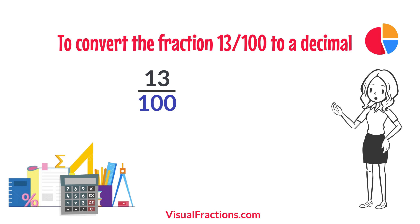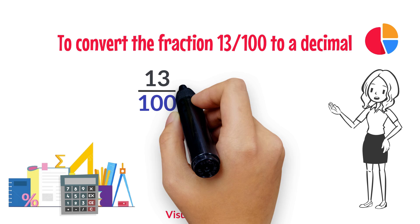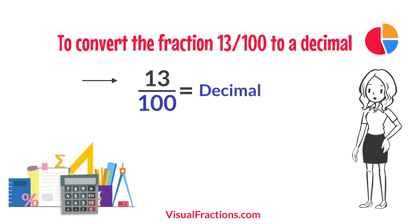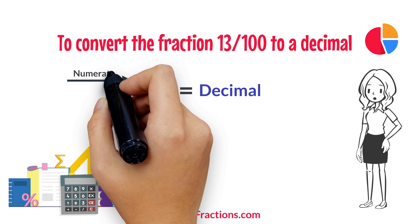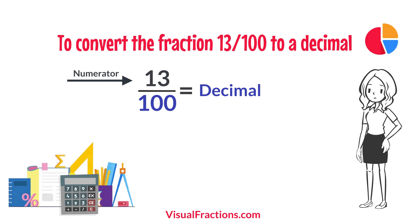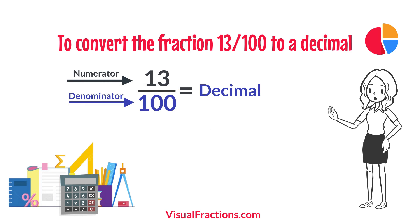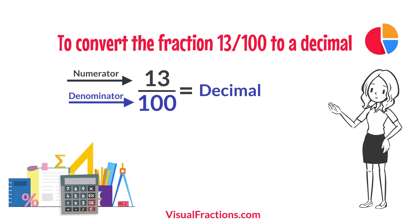To convert the fraction 13 one-hundredths to a decimal, all we need to do is divide the numerator — the top number — by the denominator — the bottom number. So we simply divide 13 by 100.